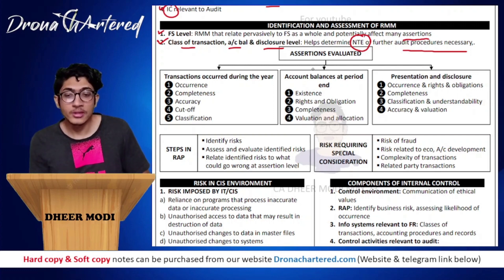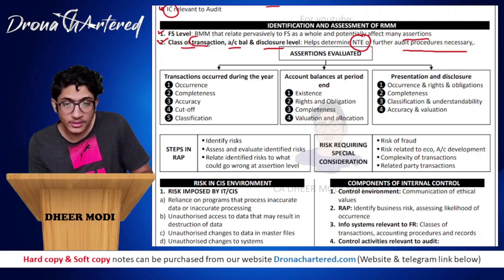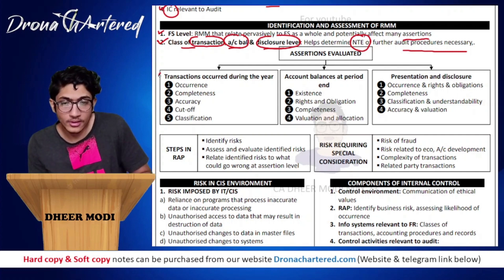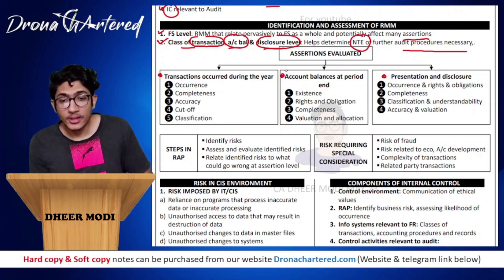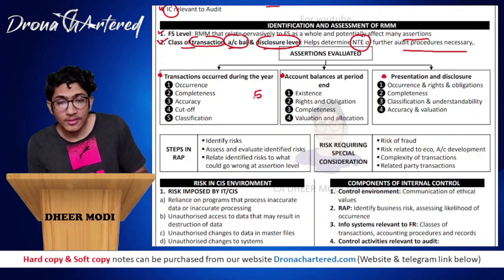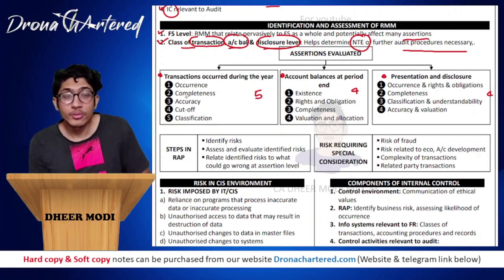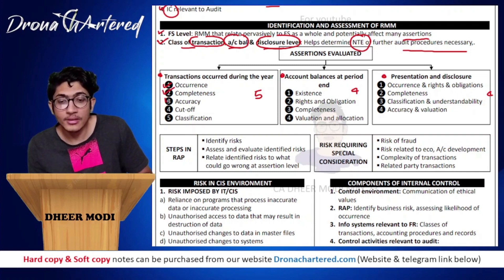There are three assertions evaluated. One is your transactions, second is your account balances and third is your disclosure level. Within transactions you check five things - that is your occurrence, completeness, accuracy, cutoff, and classification.